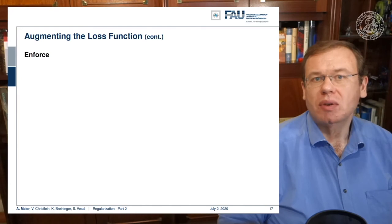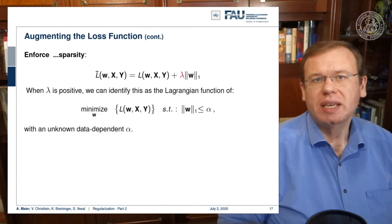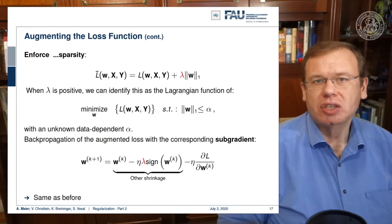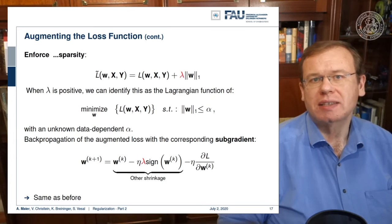We can also use other norms, for example, the L1 norm. Here we then again end up in the Lagrangian formulation where we have the original loss function subject to the L1 norm being smaller than some value alpha with an unknown data dependent alpha. Here we simply get a different shrinkage operation which now involves the use of the sine function. This is again an implication of the sub-gradient.